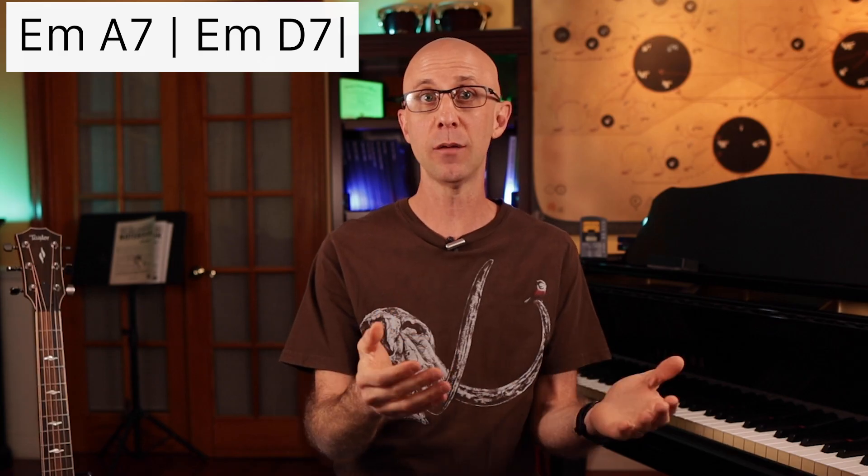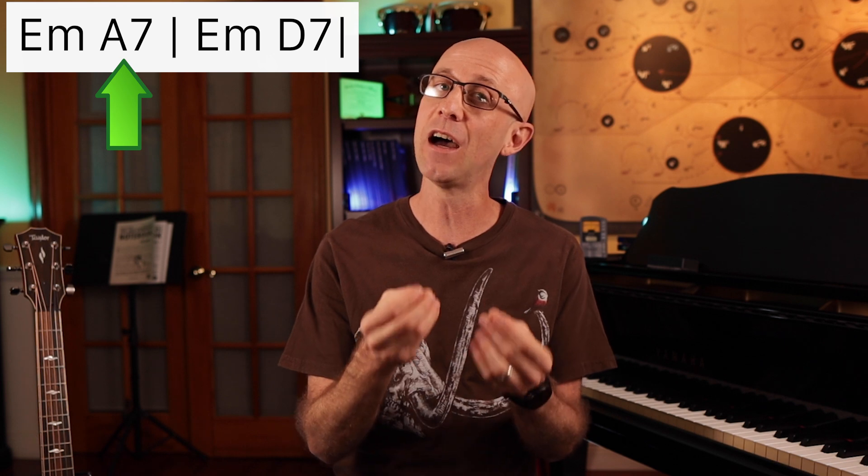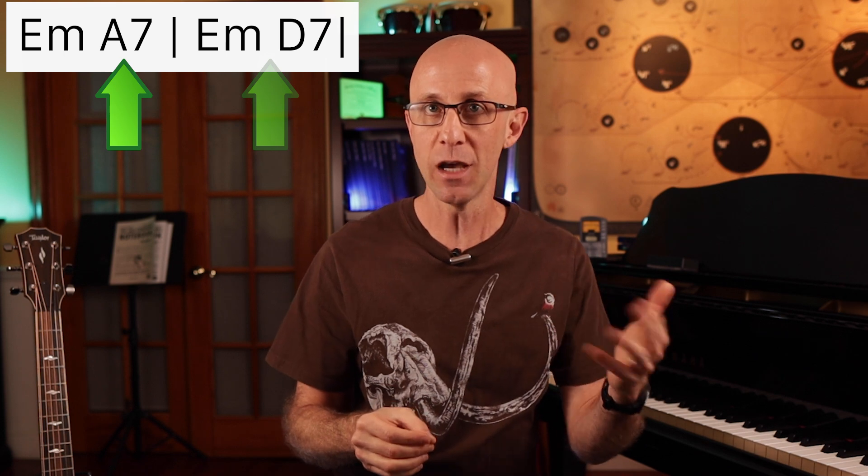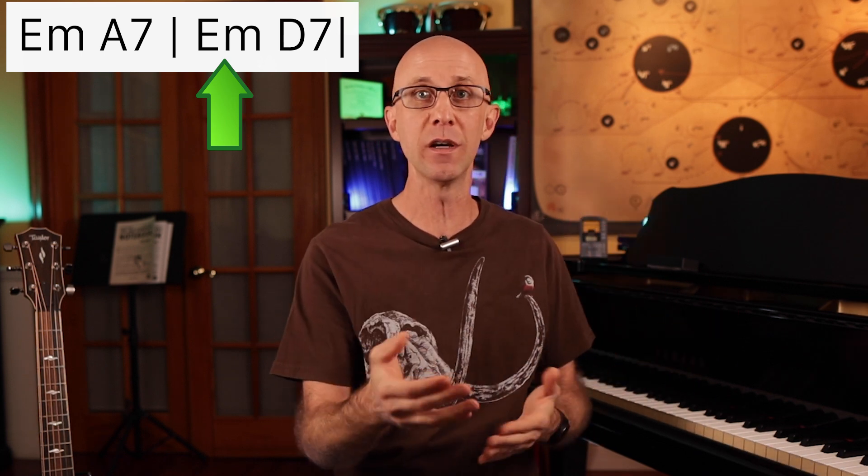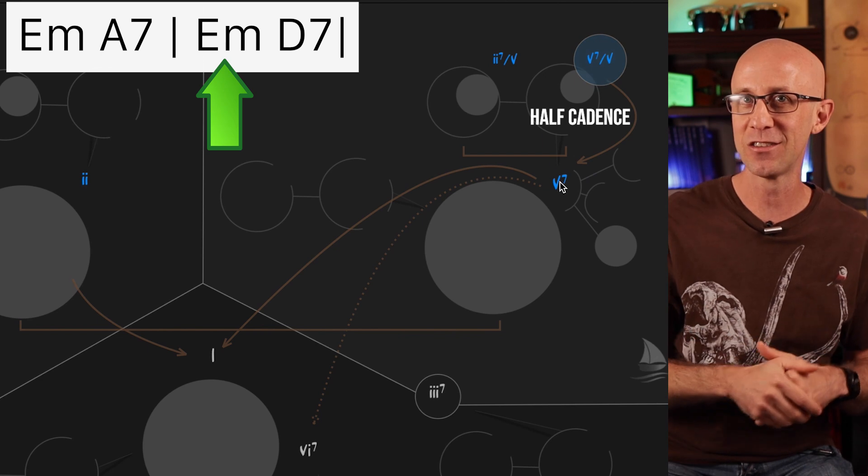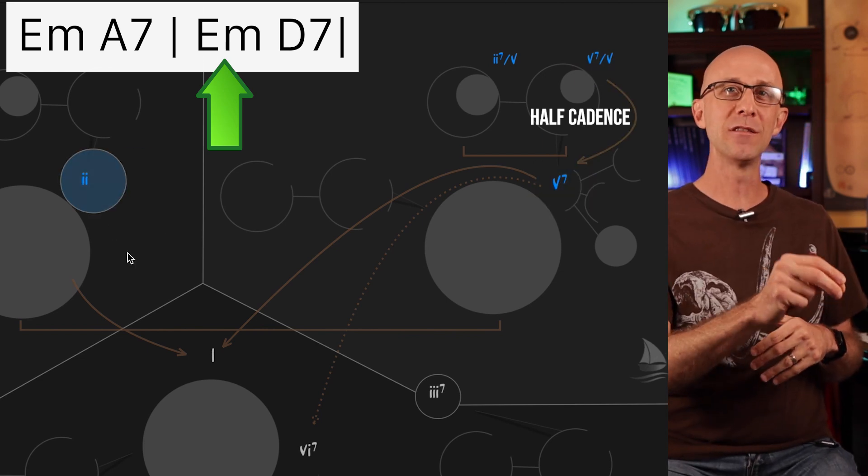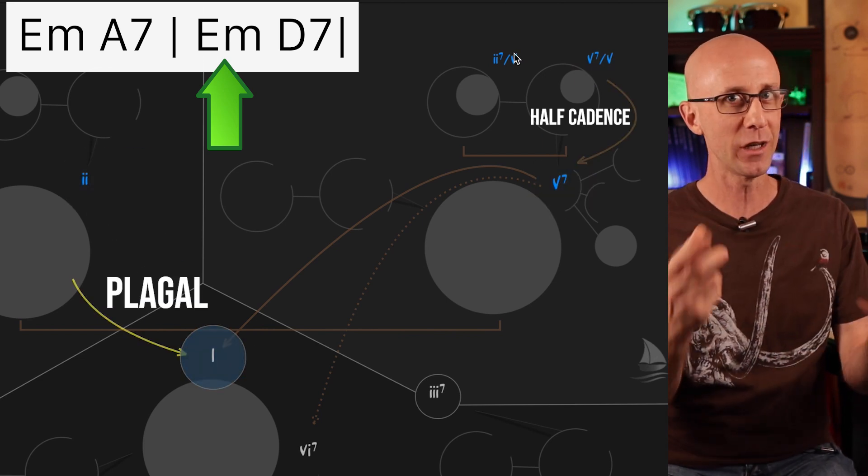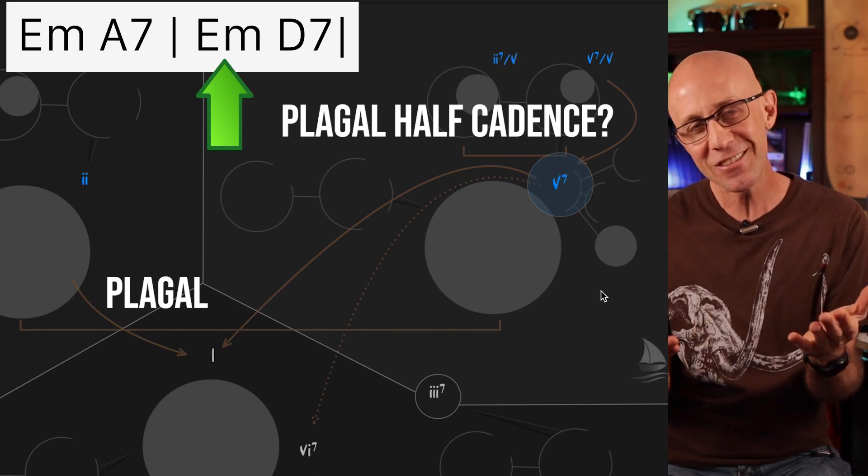The only problem in American Pie is that the A7 is not used the second time. The progression goes straight from E minor to D7. So, is this E minor back to being a 6 chord? Or has the preceding 2 of 5 to 5 movement completely changed our perspective of this E minor chord? Can we still talk about a half cadence in this case? Moving from the subdominant to the tonic is known as a plagal cadence. So is this a plagal half cadence? Let us know what you think in the comments down below.